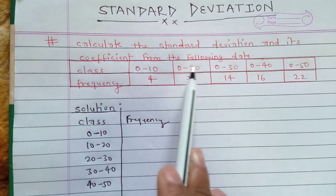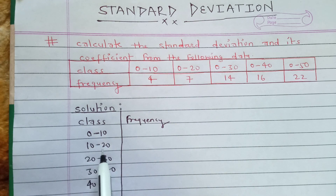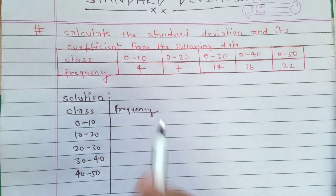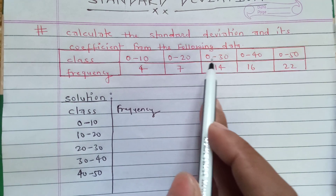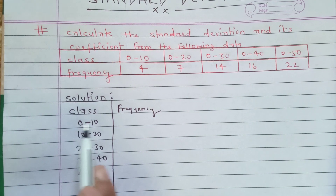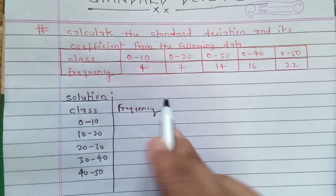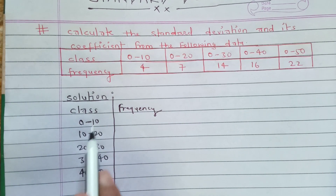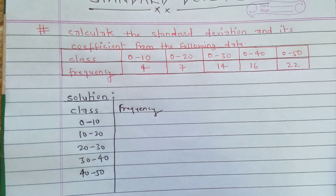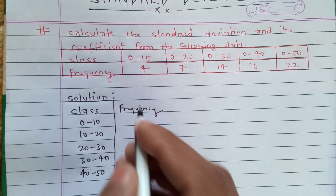So if the class is given as 0 to 20, 0 to 40, 0 to 60, then we write 0 to 20, 20 to 40, 40 to 60. If the class is 0 to 10, 0 to 20, then we arrange it as 0 to 10, 10 to 20 in a continuous interval. The frequency value starts at 4.